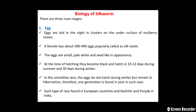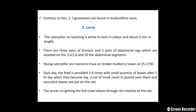In the uni-voltine race, the eggs do not hatch during winter but remain in hibernation. Therefore, one generation is found per year in such cases, and this type of race is found in European countries and in Kashmir and Punjab in India.